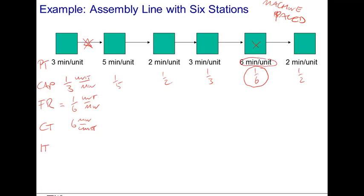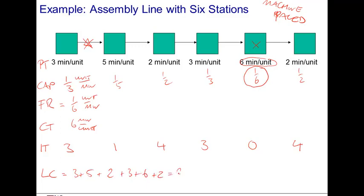Next, we compute the idle time at each resource as the difference between the cycle time and the processing time. That gives three minutes, one minute, four minutes, three minutes, zero minutes, and four minutes respectively. The labor content is the sum of the processing times: three plus five plus two plus three plus six plus two, which totals twenty-one minutes per unit. The total idle time across all resources is three plus one plus four plus three plus four, which is fifteen minutes.